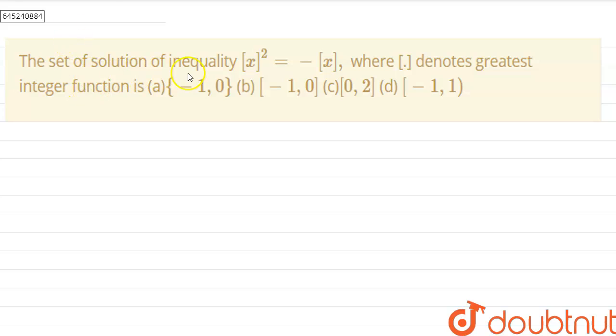Hello guys, today our question is the set of solution of inequality: greatest integer function of x whole square minus gif of x. We have to find which of the following options is correct.